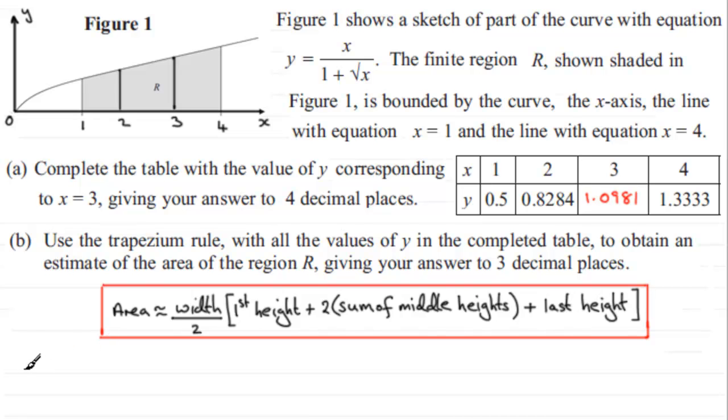The area is approximately the width of a strip - the width is clearly one unit. You can always see from the table what the width is because the values of x go up in steps of one. So it's 1 divided by 2, and then the first height is 0.5, plus twice the sum of the middle heights, so 0.8284 + 1.0981, close that bracket, then plus the last height, 1.3333.